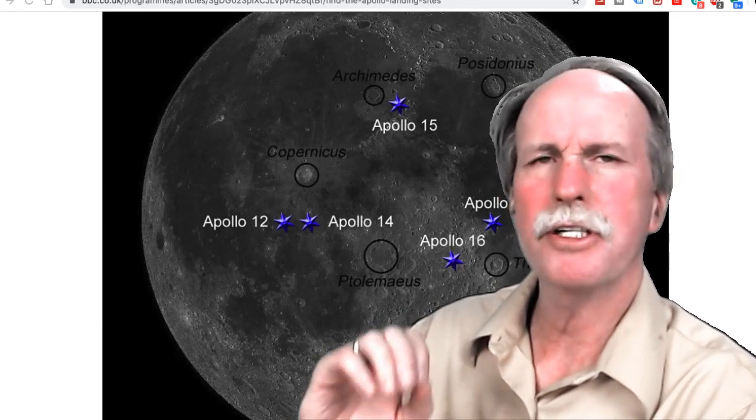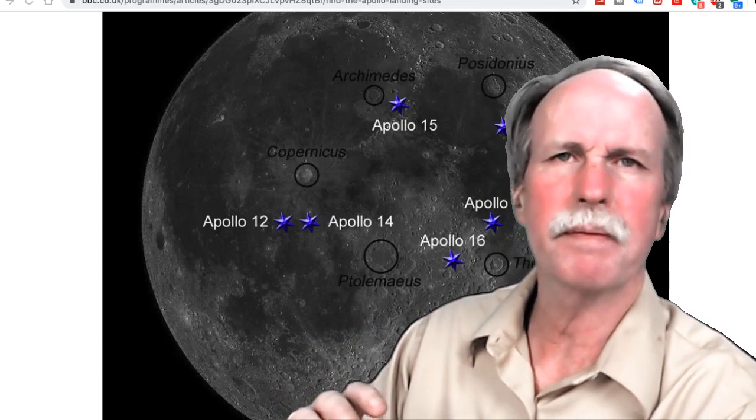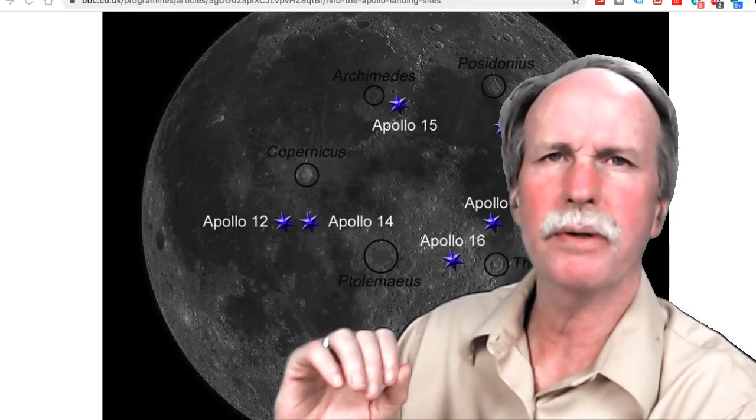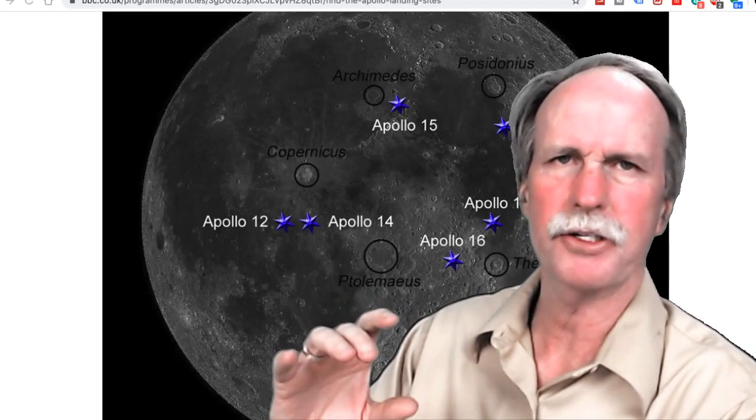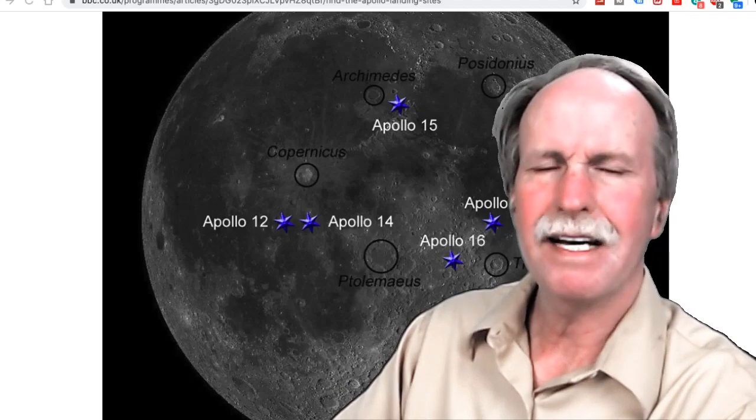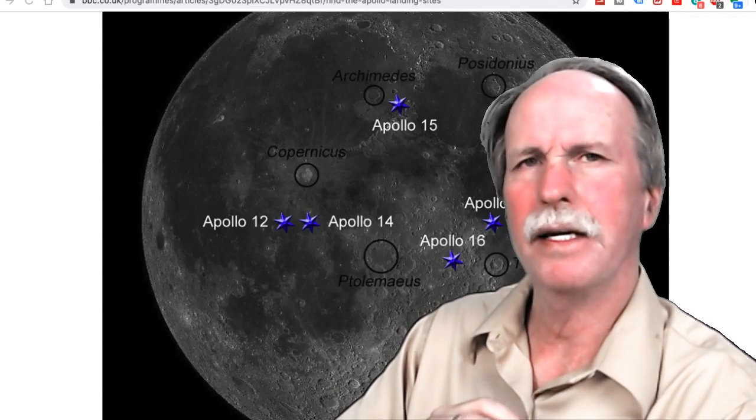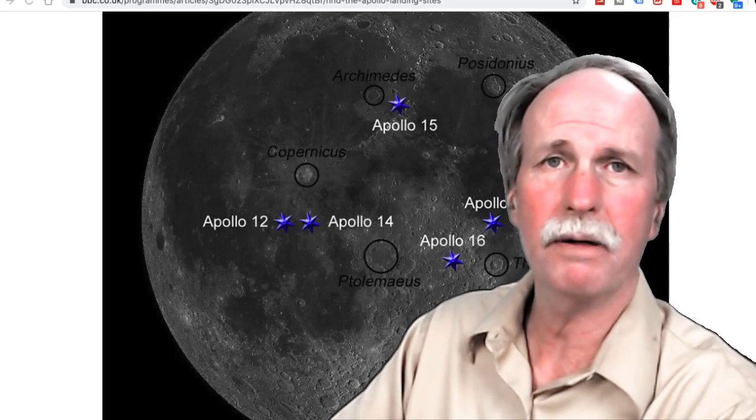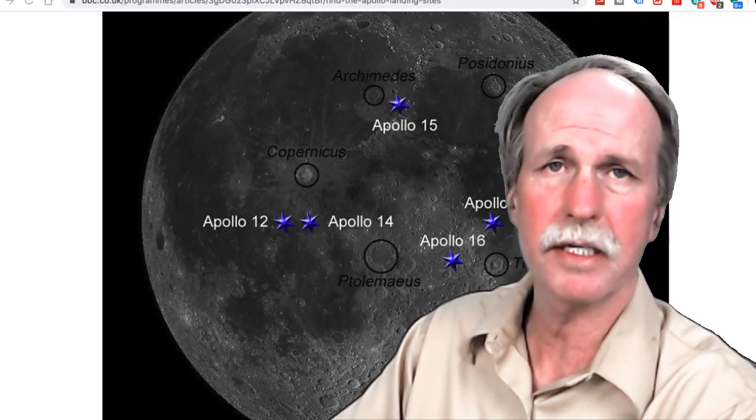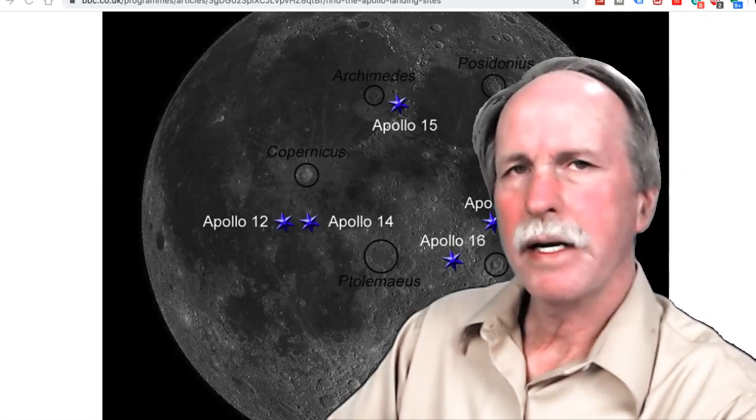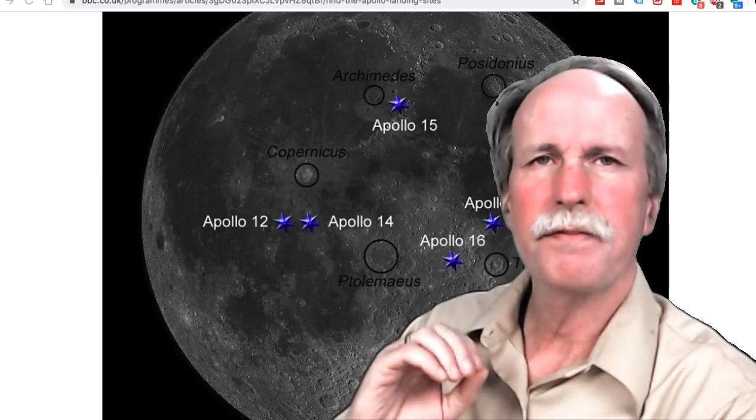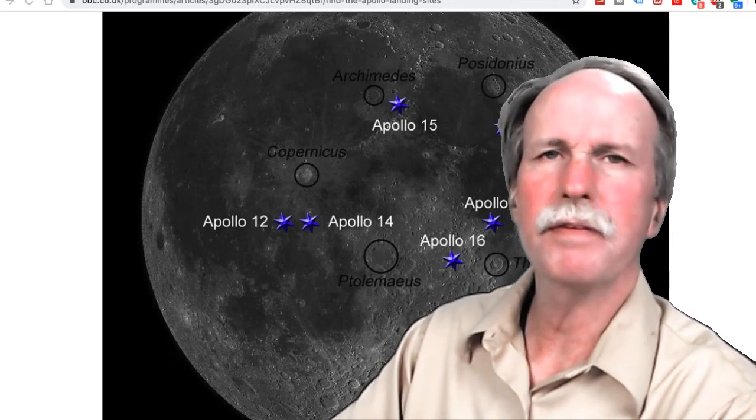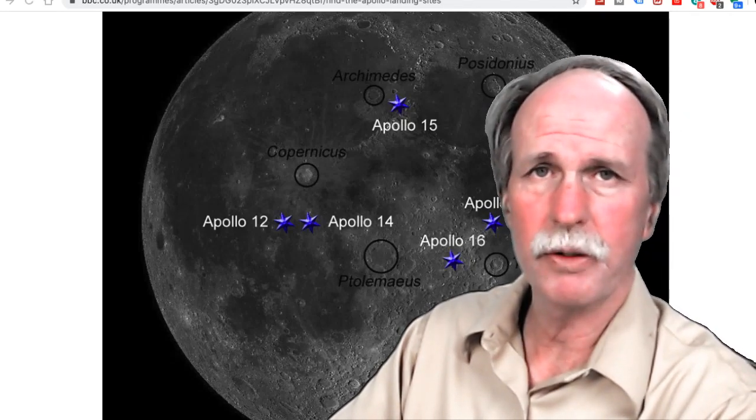Most amateur telescopes have a resolving power on the order of one arc second and at the distance to the moon that's over two kilometers. That would be about 50 times larger than the detail that we would need to see to actually pick out the Apollo landing sites from earth using a telescope. But fortunately we have the lunar reconnaissance orbiter and it has very detailed images of all the Apollo landing sites and a number of other very interesting features on the moon as well.